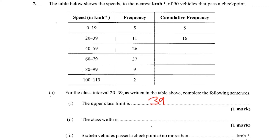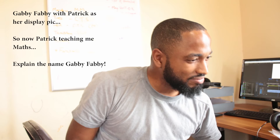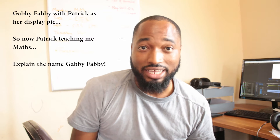Back to the question. The class width is 20. To get the class width, you need to take away the boundaries: 39.5 take away 19.5 equals 20. A subscriber by the name of Gabby Fabby just asked, isn't the class width 20? Yes, it really is 20. I made a mistake earlier - so anywhere you see 40 in this video, it should be 20.